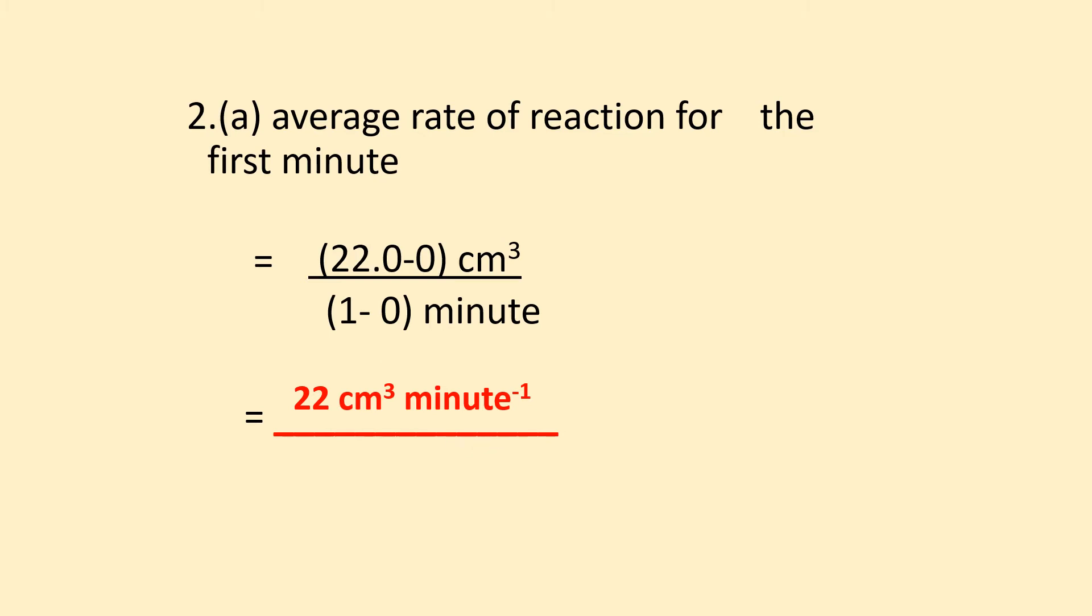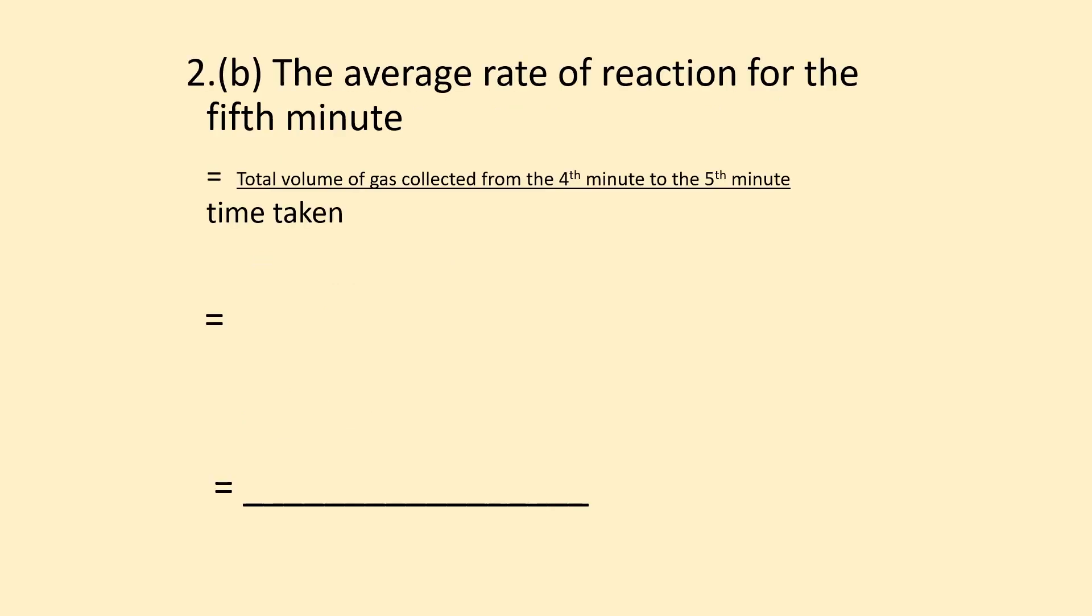For part b, the fifth minute means from the fourth minute to the fifth minute. Looking at the table, at 4 minutes the volume is 45 cm³, and at 5 minutes it's 48 cm³. So you calculate 48 minus 45.